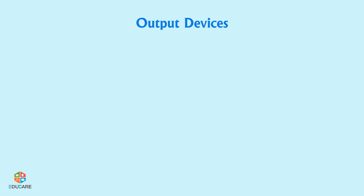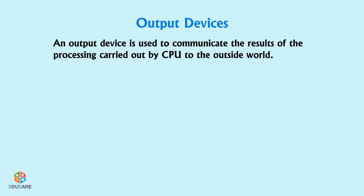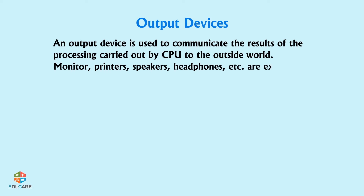Output Devices: An output device is used to communicate the results of processing carried out by the CPU to the outside world. Examples of output devices are Monitor, Printers, Speakers, Headphones, etc.